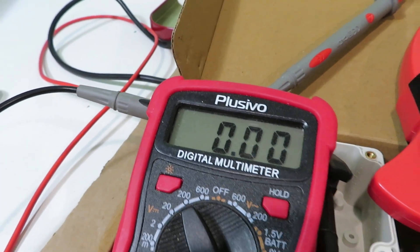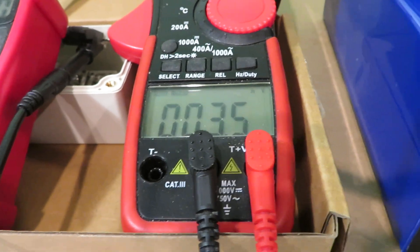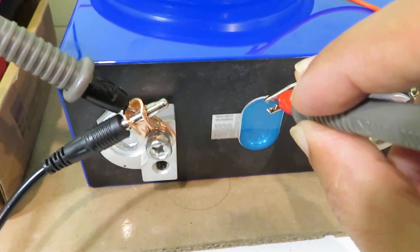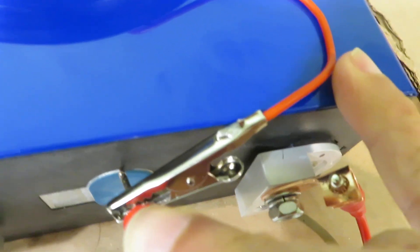And there's no current. So the casing is actually not the same voltage level as the positive.